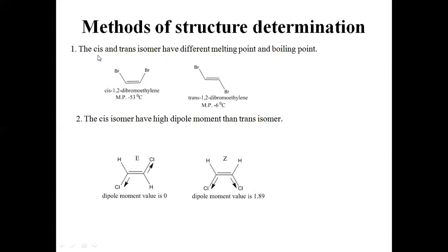The first method: the cis and trans isomers have different melting and boiling points. On the basis of melting and boiling point we can identify whether the isomer is cis or trans. For example, cis-1,2-dibromoethylene and trans-1,2-dibromoethylene have different melting points. Additionally, the cis isomer has a higher dipole moment than the trans isomer. If an isomer's dipole moment value is zero, it is definitely a trans isomer; if it is positive (non-zero), it is a cis isomer.